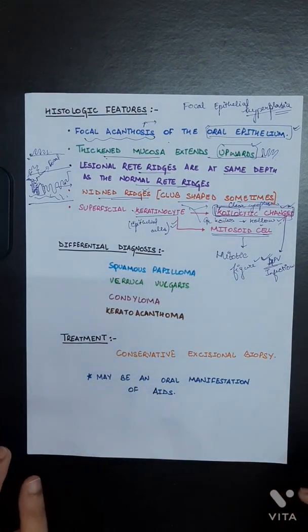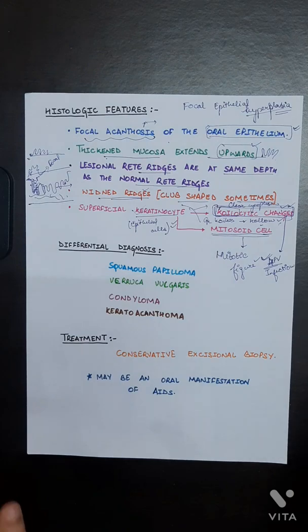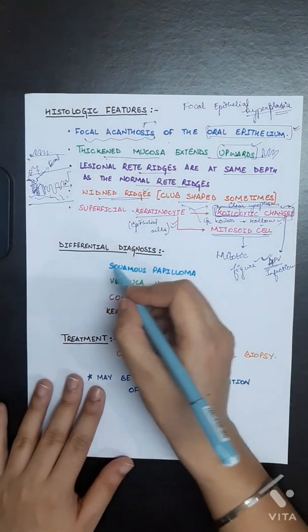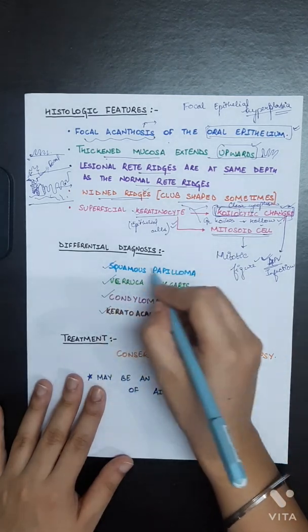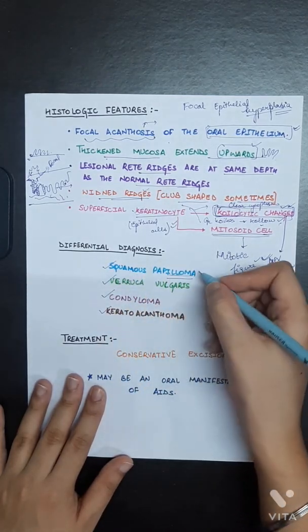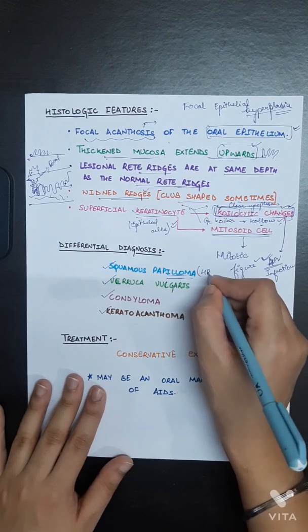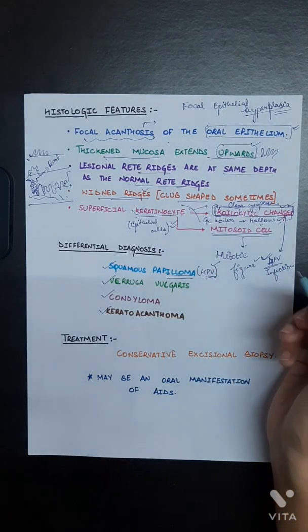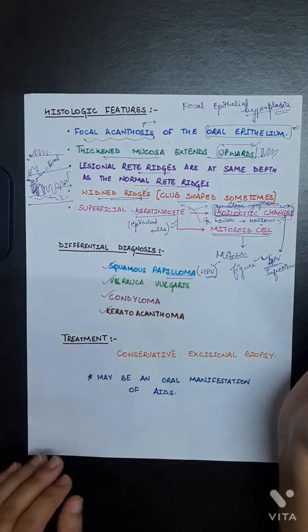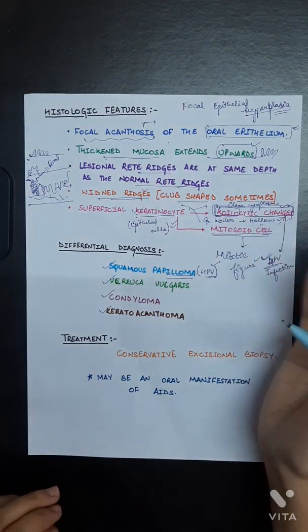The differential diagnosis of focal epithelial hyperplasia are squamous papilloma, verruca vulgaris, condyloma, keratoacanthoma. Squamous papilloma is also associated with human papilloma virus. These are the differential diagnosis of focal epithelial hyperplasia.